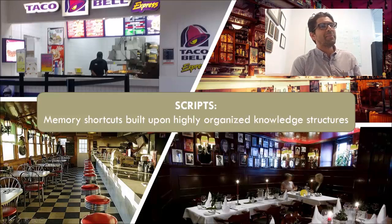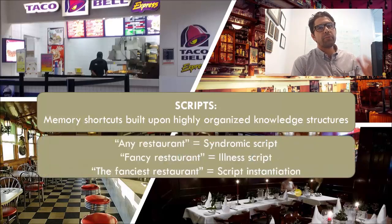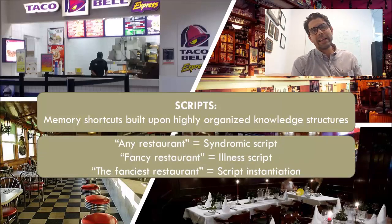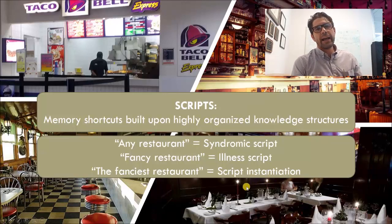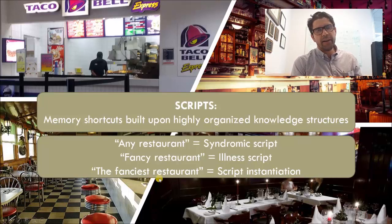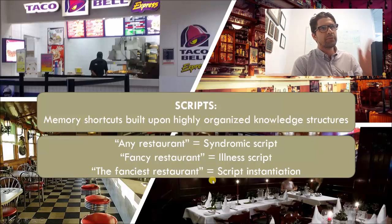So what exactly are scripts? They are memory shortcuts built upon highly organized knowledge structures. Thinking about the restaurant example, there are three levels of scripts: a syndromic script — what do I expect to happen in any restaurant; an illness script — what happens in a fancy restaurant; and script instantiation — when I actually visit a specific fancy restaurant, or the time I visited the fanciest restaurant I can remember, what happened that night.